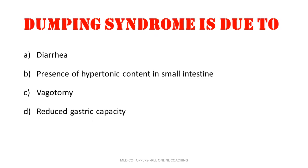Dumping syndrome is due to: diarrhea, presence of hypertonic content in small intestine, vagotomy, or reduced gastric capacity. Everyone might be knowing about dumping syndrome. Early dumping and late dumping are the two different types. The answer is presence of hypertonic content in small intestine.